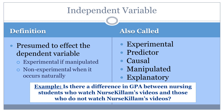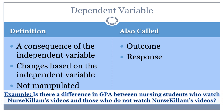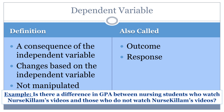Now that we know how the independent variable works, let's look at the dependent variable. Like the name suggests, the dependent variable is assumed to be a result of, or change based on, the presence, absence, or magnitude of the independent variable.